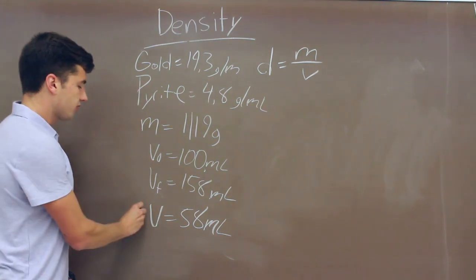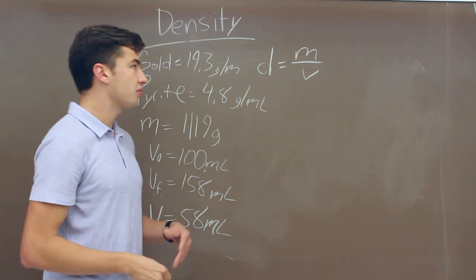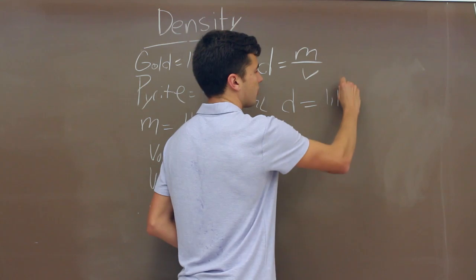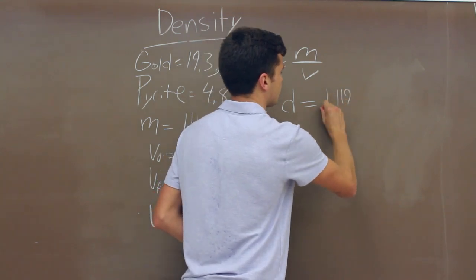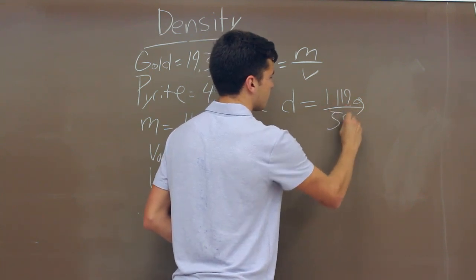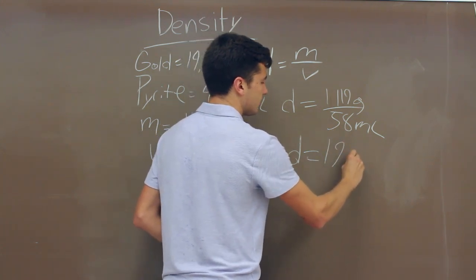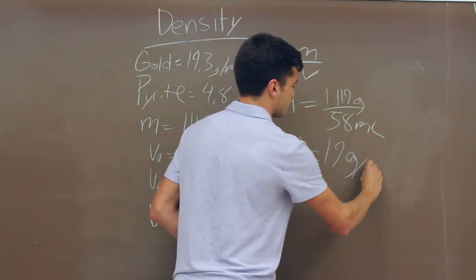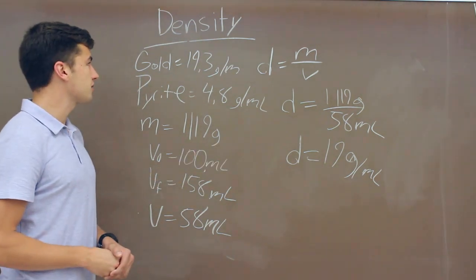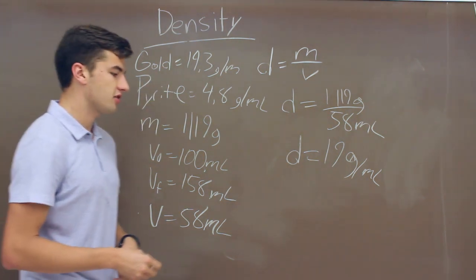Now we have the mass and the volume, which we can plug into our density equation and compare back to our known values. We divide 1,119 grams by 58 milliliters, and that gives us a density that rounds to 19 grams per milliliter. That's closest to our gold density, so we conclude that our object is in fact gold.